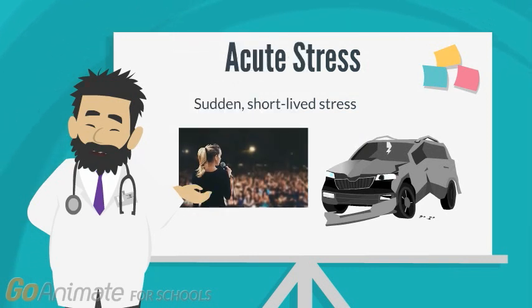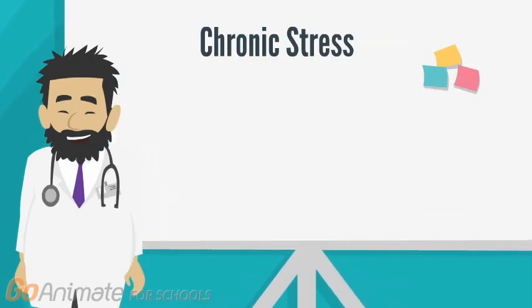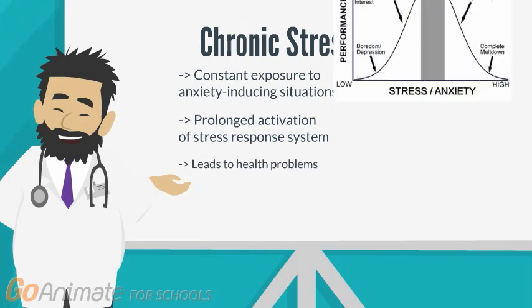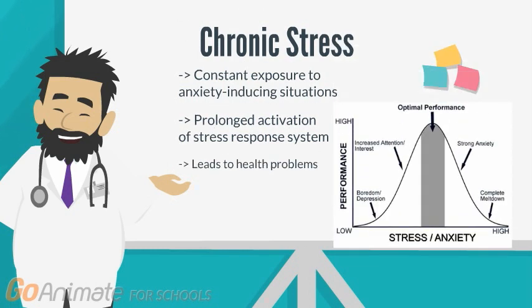Example triggers of acute stress include almost getting into a car accident or giving a speech in front of people. You feel your heartbeat in your throat and become hyper-aware of everything around you. Chronic stress results from repeated exposure to situations that lead to the release of stress hormones and constant activation of our stress response system. This type of stress can cause wear and tear on your mind and body.